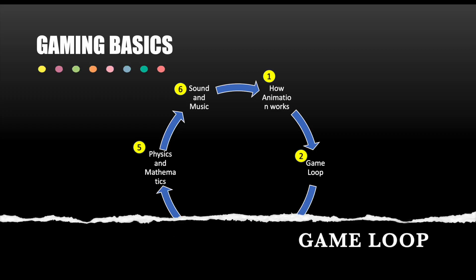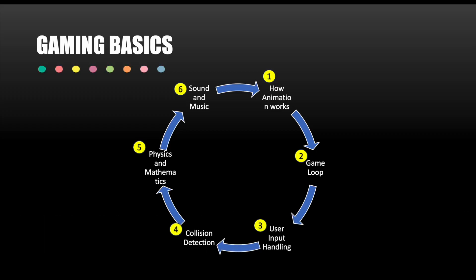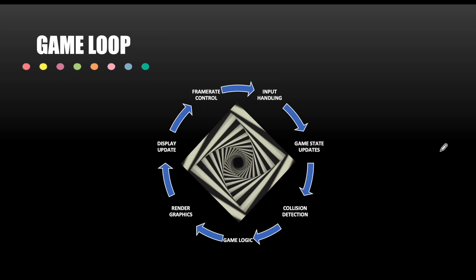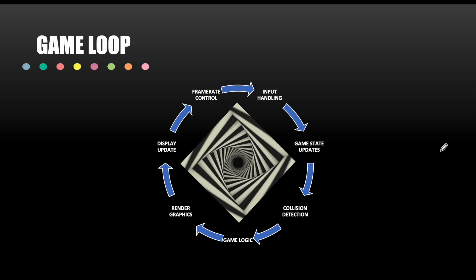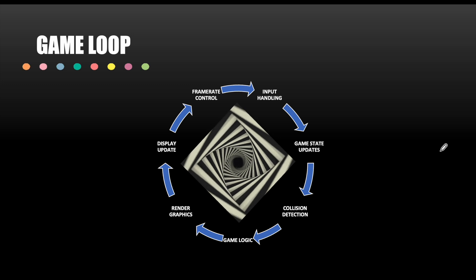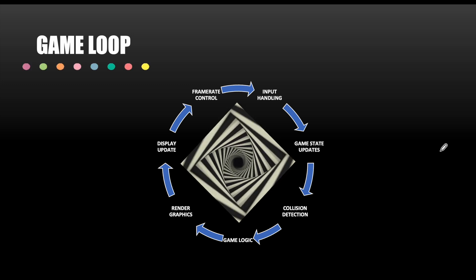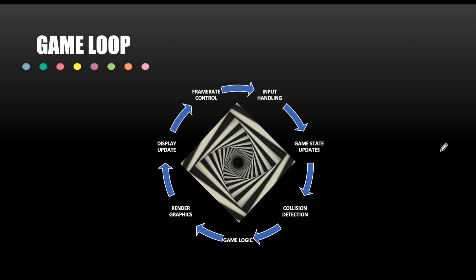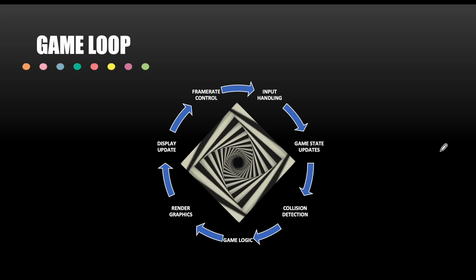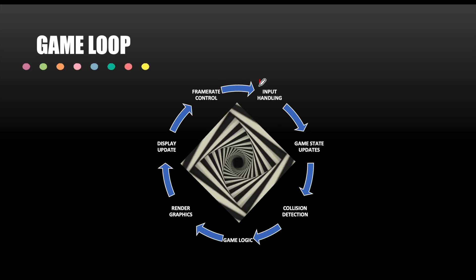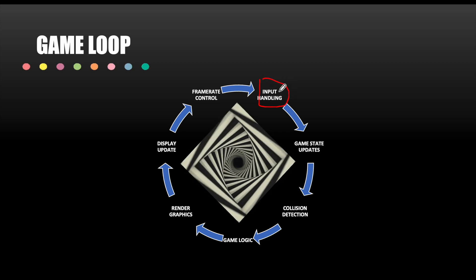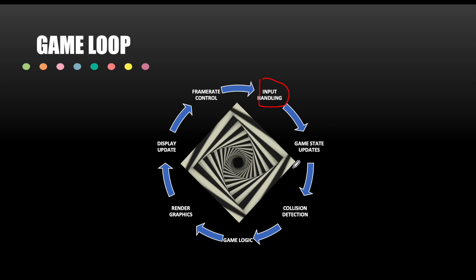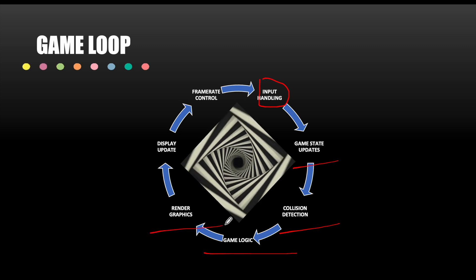The second thing we need to understand is the game loop. When you execute a game, you have to have a loop that is continuously running — forever — unless you quit the game. Inside this loop you would be displaying sprites, updating sprites, running game logic, and rendering. These activities include: input handling, game status update, collision detection, game logic, render graphics, display update, and frame rate control.